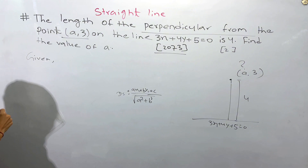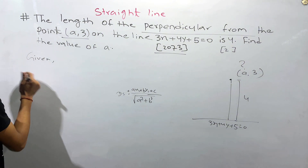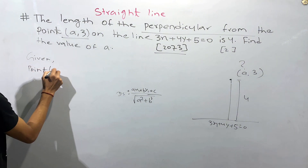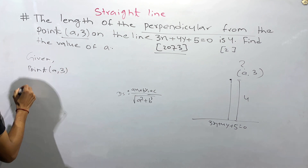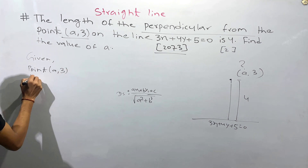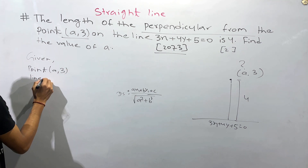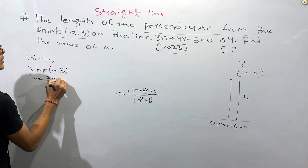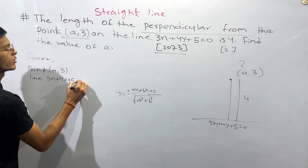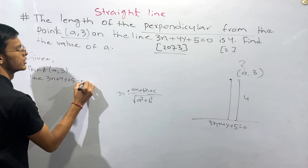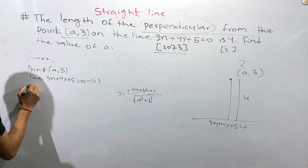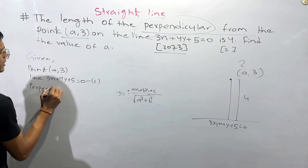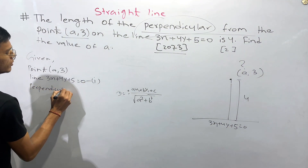Using this formula, the length can be calculated. We substitute: x is 2, and proceed with the values from the line equation ax + by + c = 0.